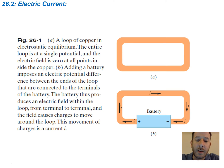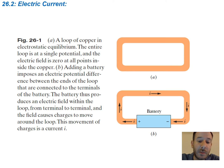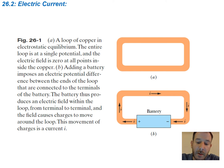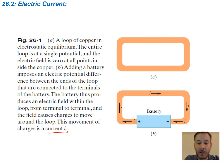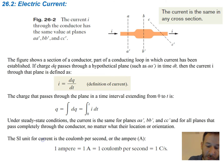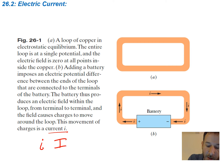The top loop shown is a loop of copper in electrostatic equilibrium, meaning there's no flow of charge. The entire loop is at a single potential and the electric field is zero at all points inside the copper, because it's a conductor. Adding a battery imposes an electric potential difference between the ends of the loop connected to the battery terminals. The battery thus produces an electric field within the loop from terminal to terminal, and that field causes charges to move around the loop. This movement of charge is called current, I. Current can be written with a lowercase i or a capital I — they're pretty much interchangeable, and your textbook uses the lowercase i in most cases.